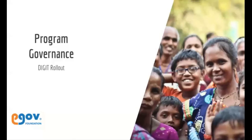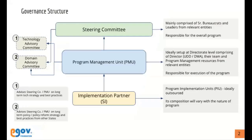In order to address this, what we have done in our programs and advise various governments to do is to set up a governance structure. The governance structure is normally formulated when a program is being designed and launched. In government programs, apart from technology, the processes play an equally important role — it's not just about deploying technology, it is also about people using the technology to avail benefits. What we normally propose is this standard governance structure, which we have set up in many of our programs and recommend to all our government accounts.